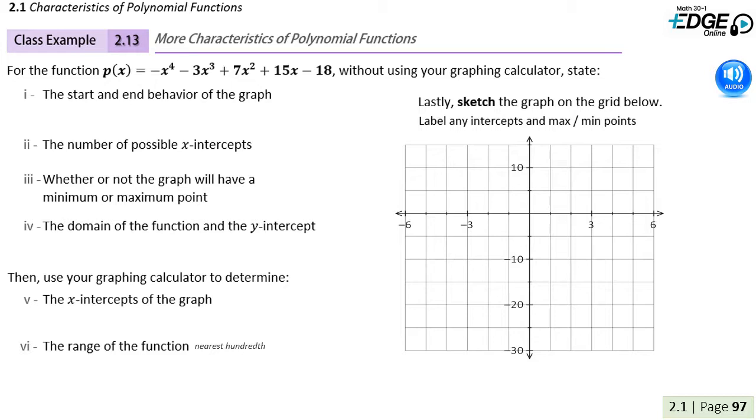Let's start with the start and end behavior of the graph. Here we have a degree 4 polynomial, meaning it is even, and we have a negative leading coefficient of negative 1. So we know that both arms will be in the same direction, and because that leading coefficient is negative, that direction will be down. So formally we would say that the graph starts negative in quadrant 3 and ends negative in quadrant 4.